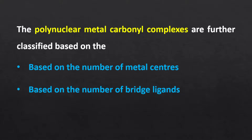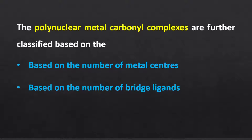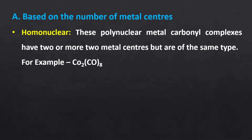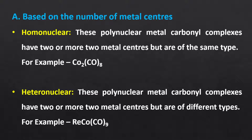The polynuclear metal carbonyl complexes are further classified based on the number of metal centers and number of bridge ligands. Based on the number of metal centers, we can classify them as homonuclear and heteronuclear. Homonuclear metal carbonyl complexes have two or more metal centers of the same type — for example, dicobalt octacarbonyl. In heteronuclear complexes, we have two or more metal centers of different types — for example, cobalt rhenium nonacarbonyl complex.